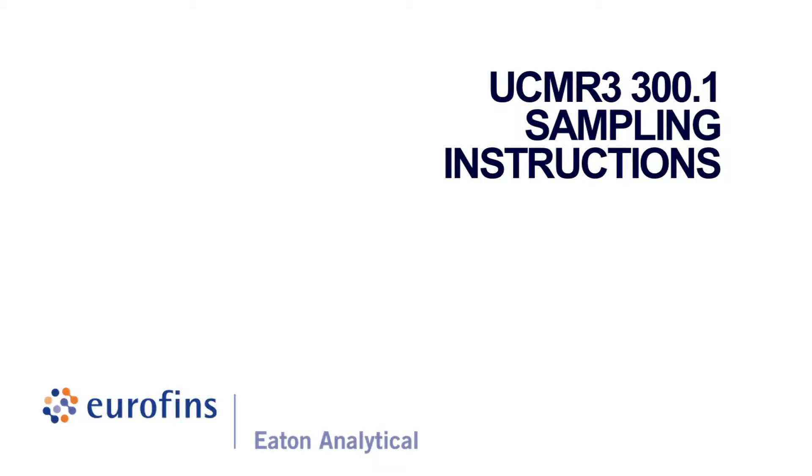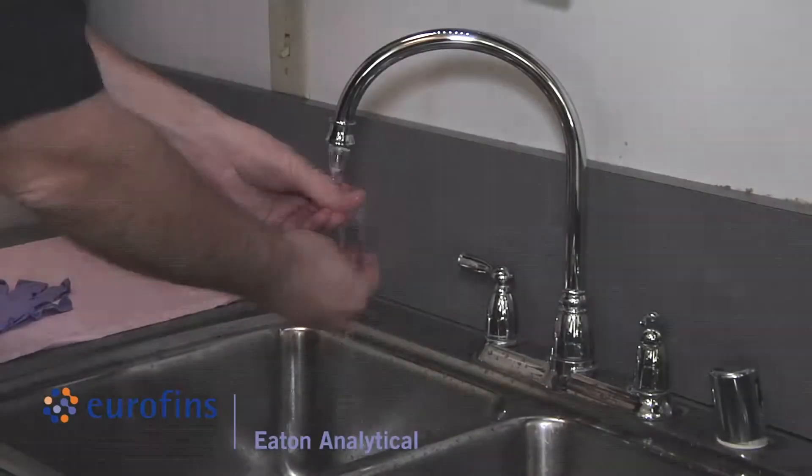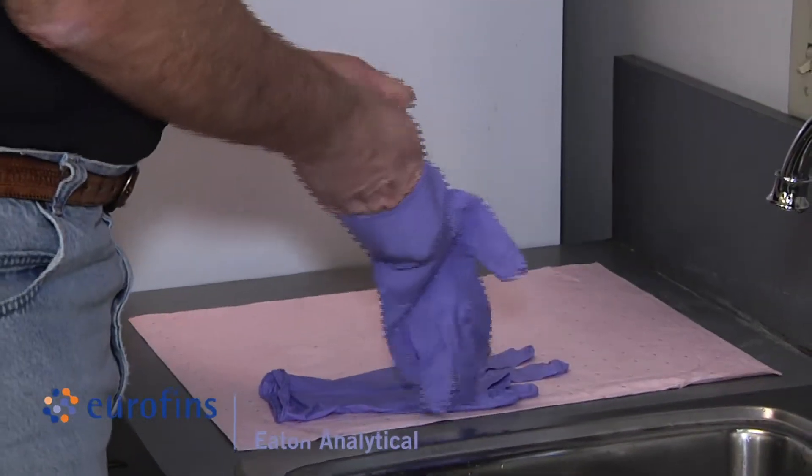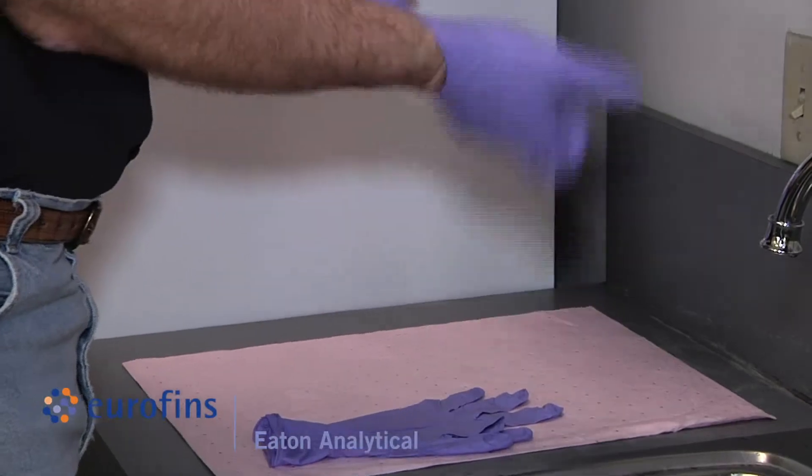UCMR3 300.1 sampling instructions. Wash your hands before sampling and wear the powderless nitrile gloves which are included in the kit during sampling and sample handling.